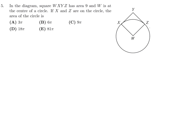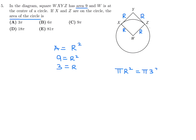Question 5: Square WXYZ has an area of 9, and W is at the center of a circle. If X and Z are on the circle, what is the area of the circle? Since X and Z are on the circle, those distances represent radii. The area of the square is r squared, so r squared equals 9 and r equals 3. The area of the circle is pi r squared, which is 9 pi. So number 5, the answer is C.